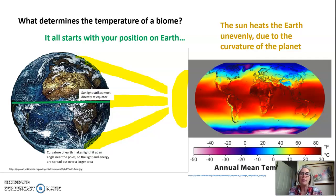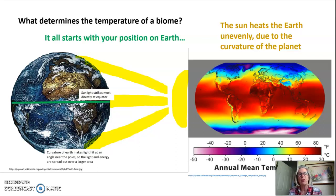Because the sun hits the Earth unevenly due to the curvature of the planet, it heats the planet unevenly too. If we look at the annual mean temperature of the Earth, you can see that near the equator it's very hot most of the year, whereas the further you get from the equator the cooler the annual mean temperature is. This all has to do with the curvature of the Earth and how energy from the sun hits the Earth.